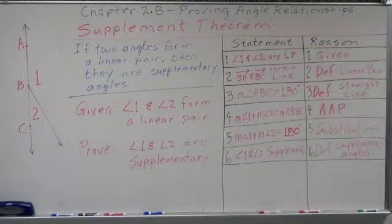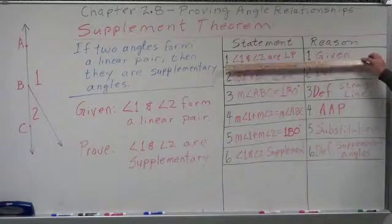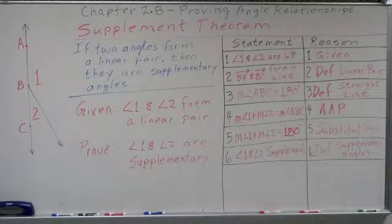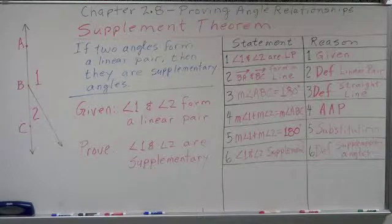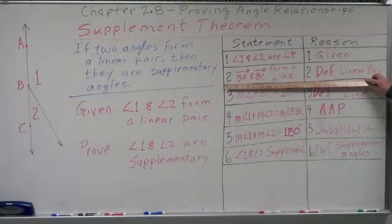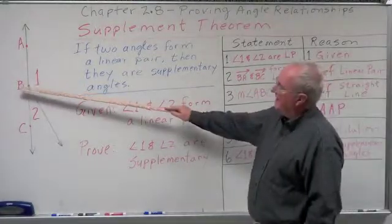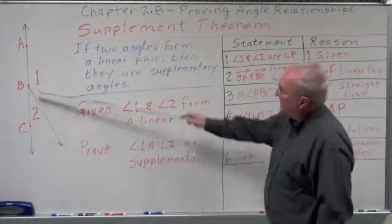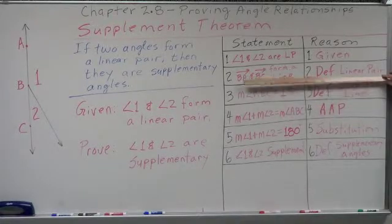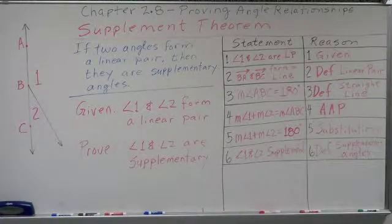Here are our statements and reasons. Statement number one is our given: angle one and two are a linear pair — given. From the formal definition of a linear pair, the non-common sides form opposite rays which form a line. So ray BA and ray BC form a line. Ray BA starts at B going through A, and ray BC starts at B going through C — they are opposite rays and form a straight line. That's from the definition of a linear pair.